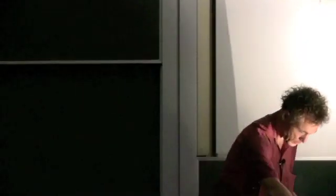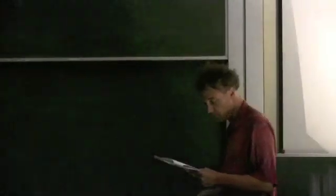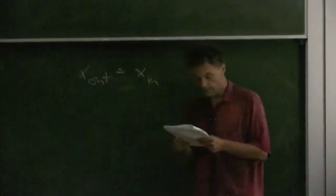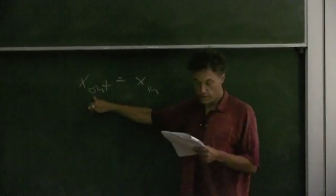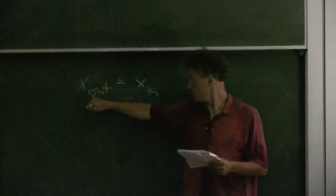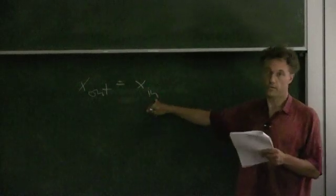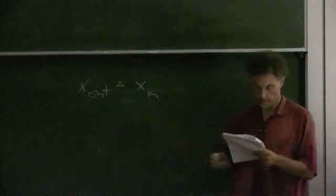So for example, for any economy, the total supply of goods and services or gross output, X_out, must be the total uses of goods and services, X_in.